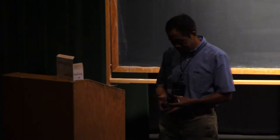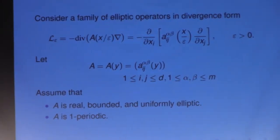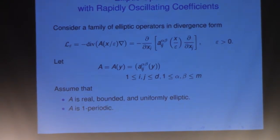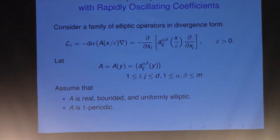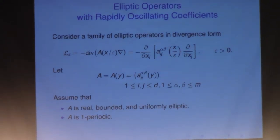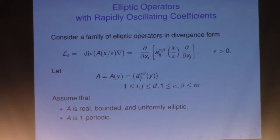Let me review what we proved mainly last time. This is the setup. We're dealing with a family of elliptic operators, second order, in divergence form, with a small parameter epsilon appearing in the denominators of the variable. Epsilon is presumed to be very small, somewhere between 0 and 1.